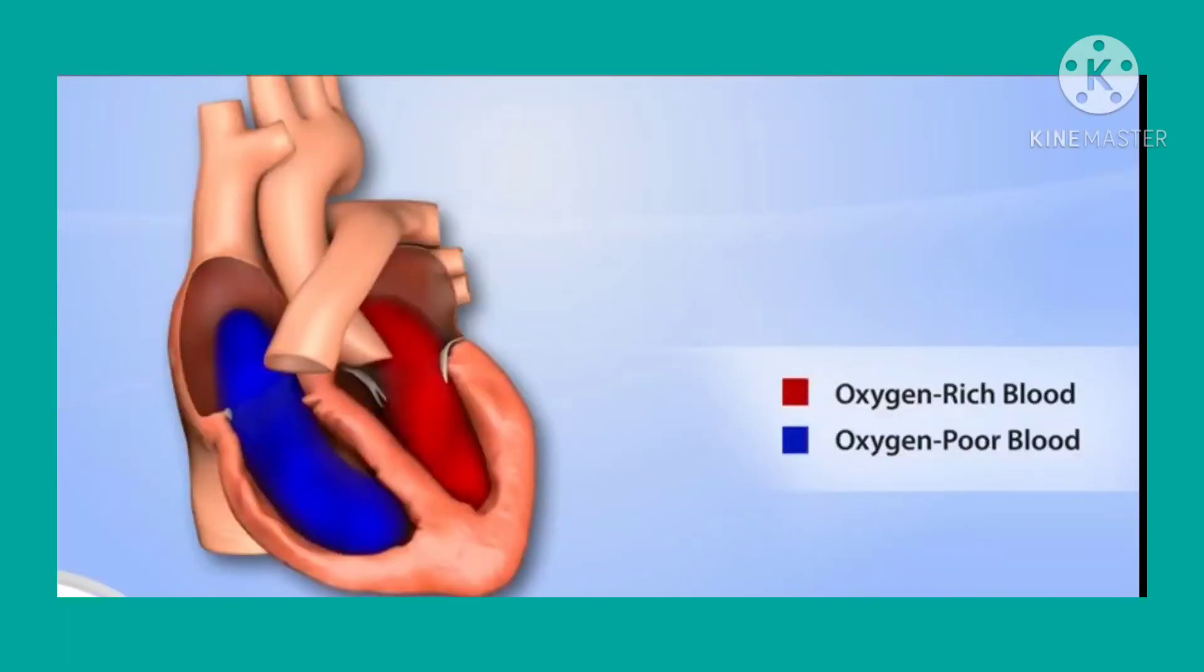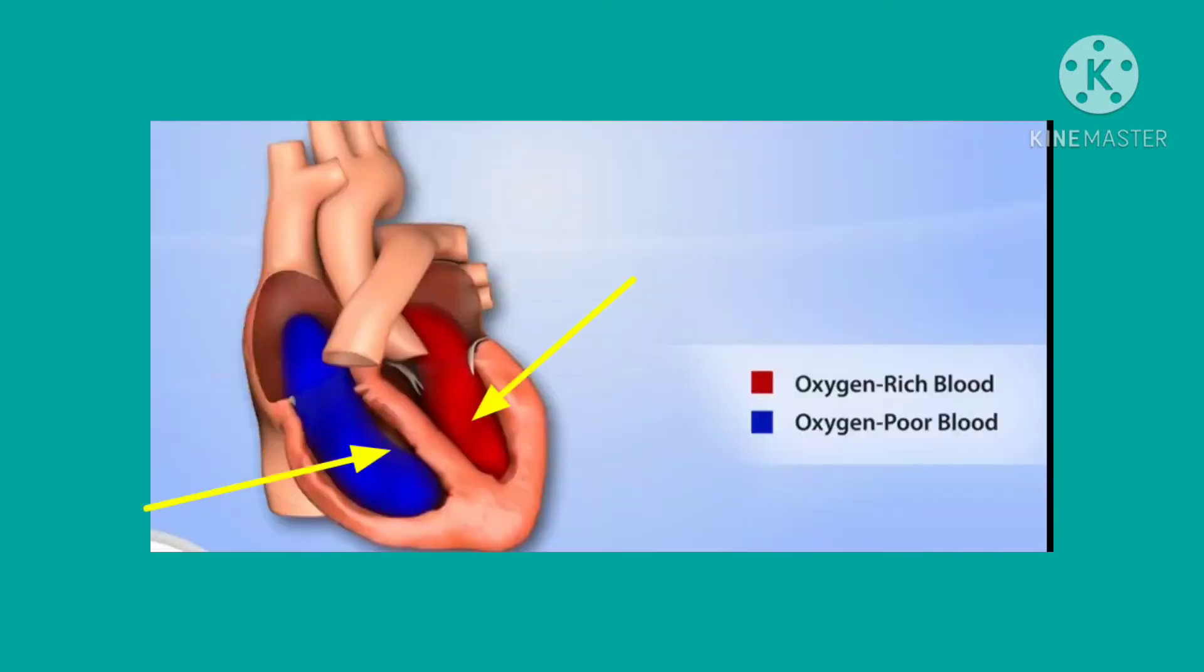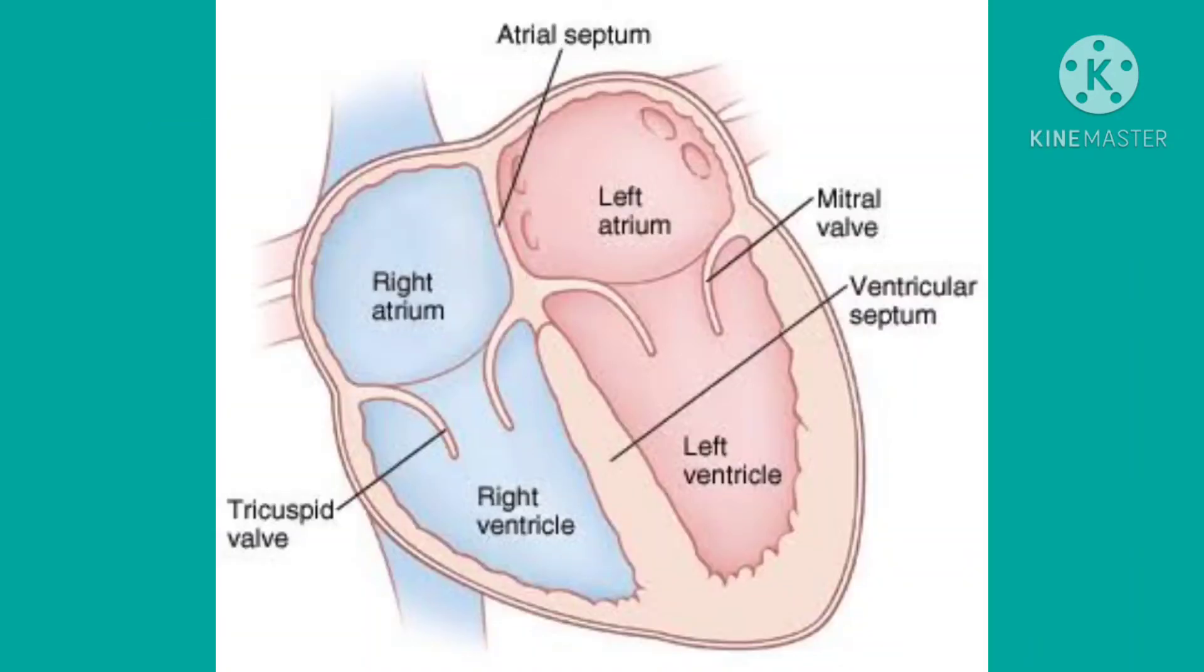The left side of the heart has oxygen-rich blood, also called oxygenated blood, whereas the right side has carbon dioxide-rich blood, also called deoxygenated blood. The left side is completely separated from the right side by a partition wall called the septum, which prevents mixing of oxygenated and deoxygenated blood.